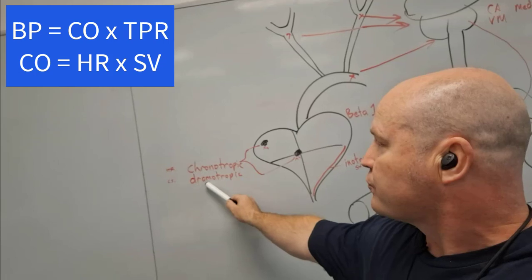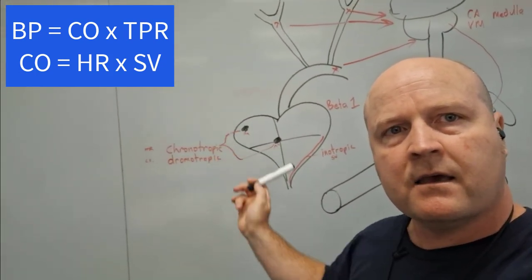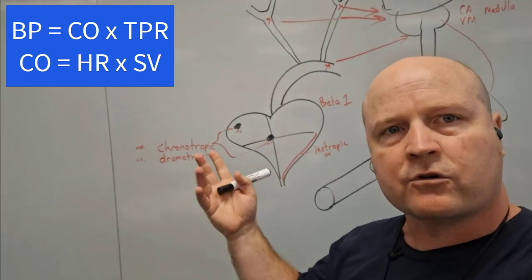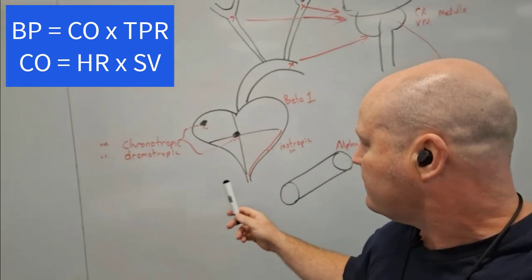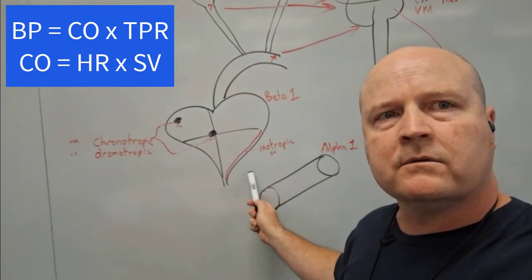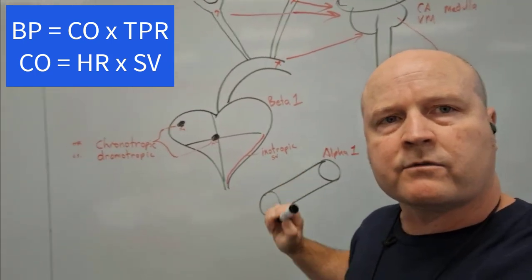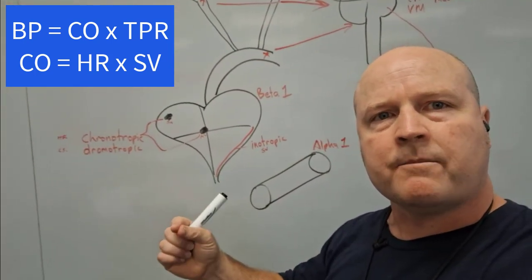We're going to have a dromotropic response, and it's going to improve the conduction speed or velocity through the heart, again to increase the heart rate. And we're also going to go to the cardiac muscle, the myocardium, and we're going to have an inotropic response, which is going to increase stroke volume.